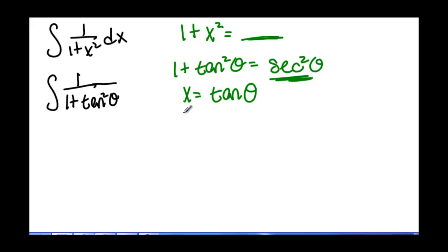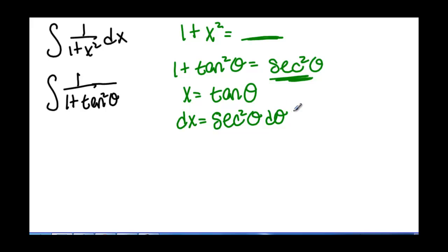The derivative of tangent of theta is secant squared of theta d theta. So in this integral, instead of dx, we have secant squared of theta d theta. Now we have the integral of 1 over 1 plus tangent squared of theta, times secant squared of theta d theta.